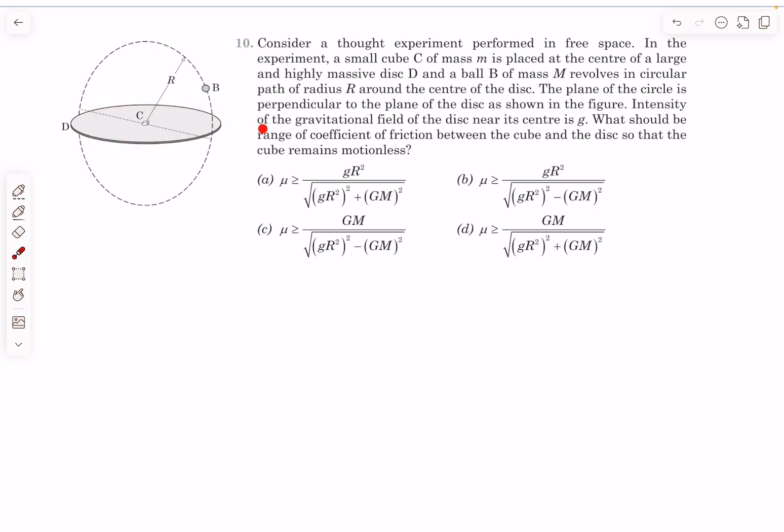Intensity of the gravitational field of the disk near its center is g. Very close to the center of the disk, the gravitational attraction is g. The weight of this cube will be simply mass m times the value of g.